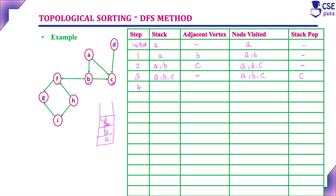In step 4, the top element is now B. Stack is A and B. Adjacent vertices to B: C is already visited, and we can still reach F. So the adjacent vertex is F; nodes visited are A, B, C, and F. F is pushed into the stack. The top element is now F. In step 5, the stack content is A, B, F, and the adjacent vertex reachable from F is G. Nodes visited are A, B, C, F, and G; no elements popped in this step.